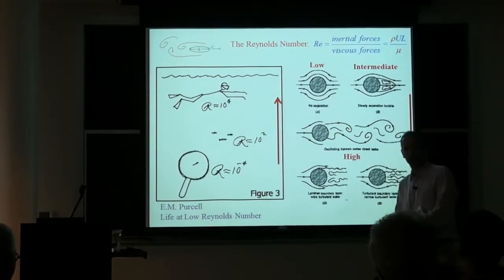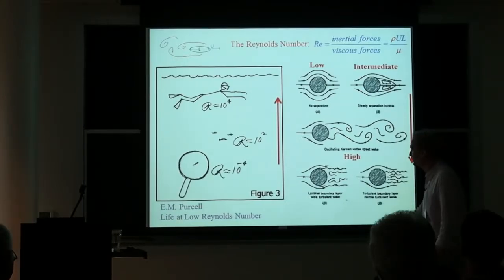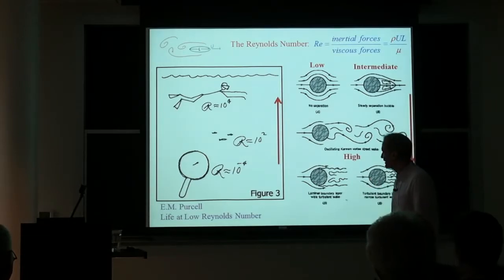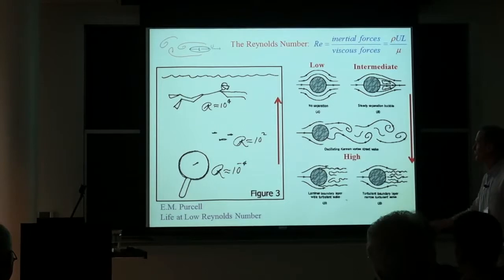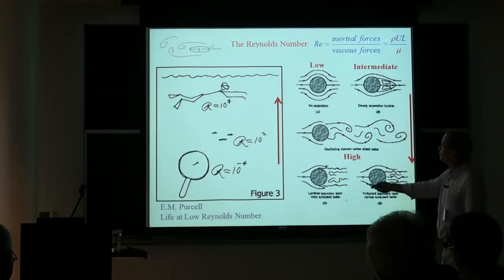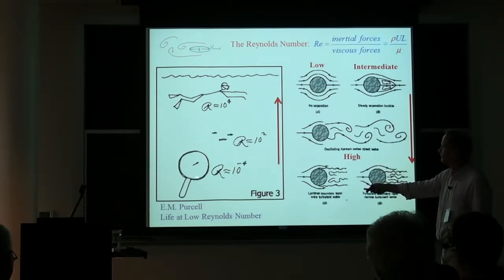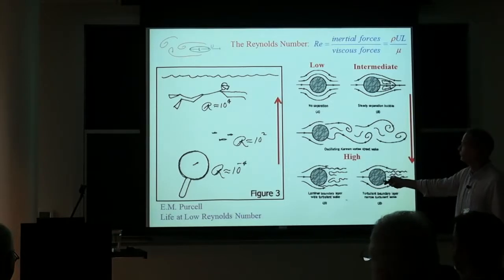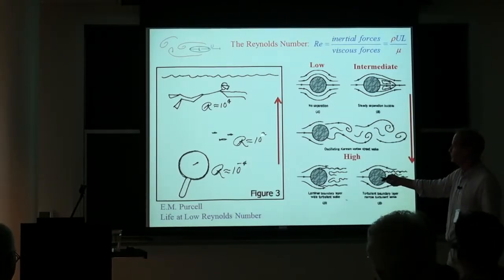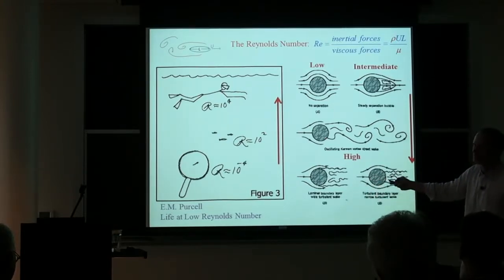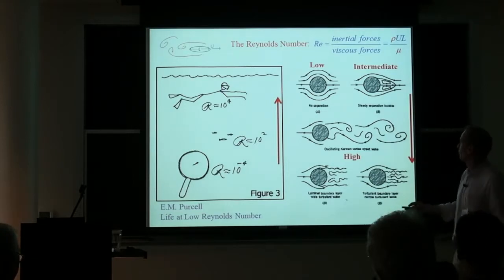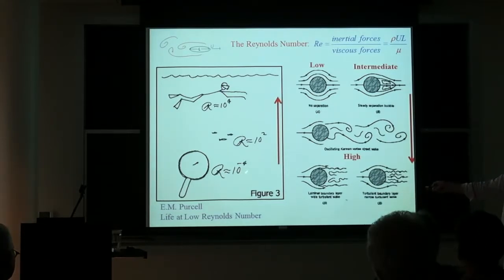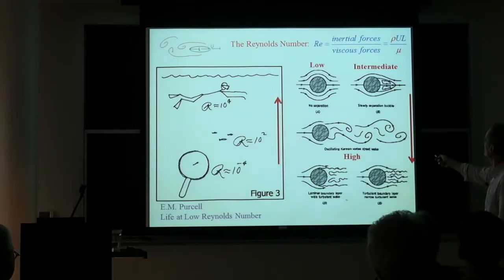The Reynolds number organizes a lot of thinking about possible behaviors for bodies moving through fluids. There's a nice diagram from Edwin Purcell's famous article showing ranges of Reynolds numbers — from bacteria at around 10⁻⁵, to small fish around 10², to a human swimming around 10⁴. These ranges are associated with very different ways in which fluid flows around a moving body.